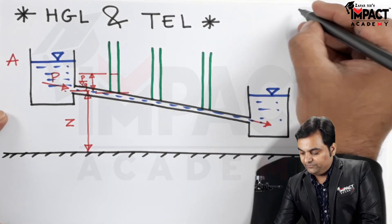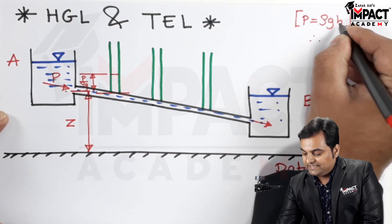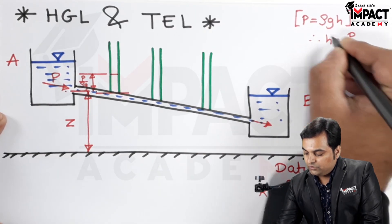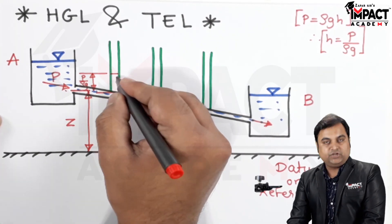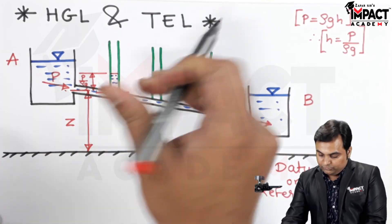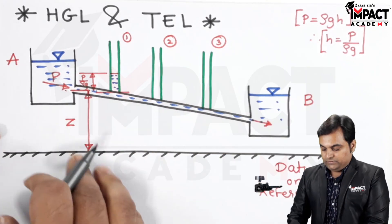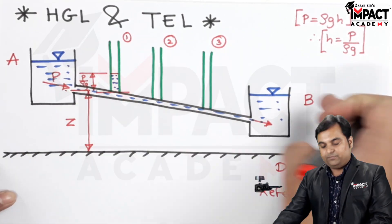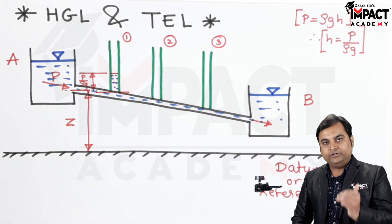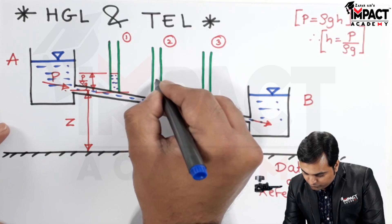The pressure head comes from the formula: since pressure intensity is rho g into h, therefore h is the pressure head given by pressure intensity upon rho g. This P upon rho g is the pressure head at section 1, as the fluid would be rising inside these pipelines. I am denoting them as first, second, and third. When the fluid further moves, the pressure intensity will go on decreasing, and at the same time the pressure head will also decrease in the remaining pipelines — so the pressure head falls.